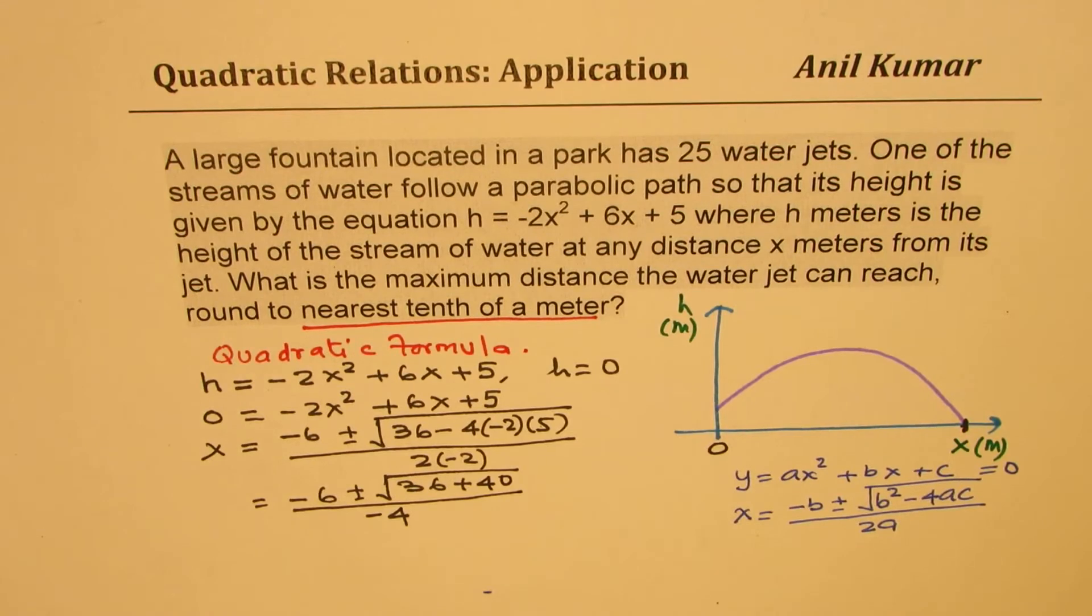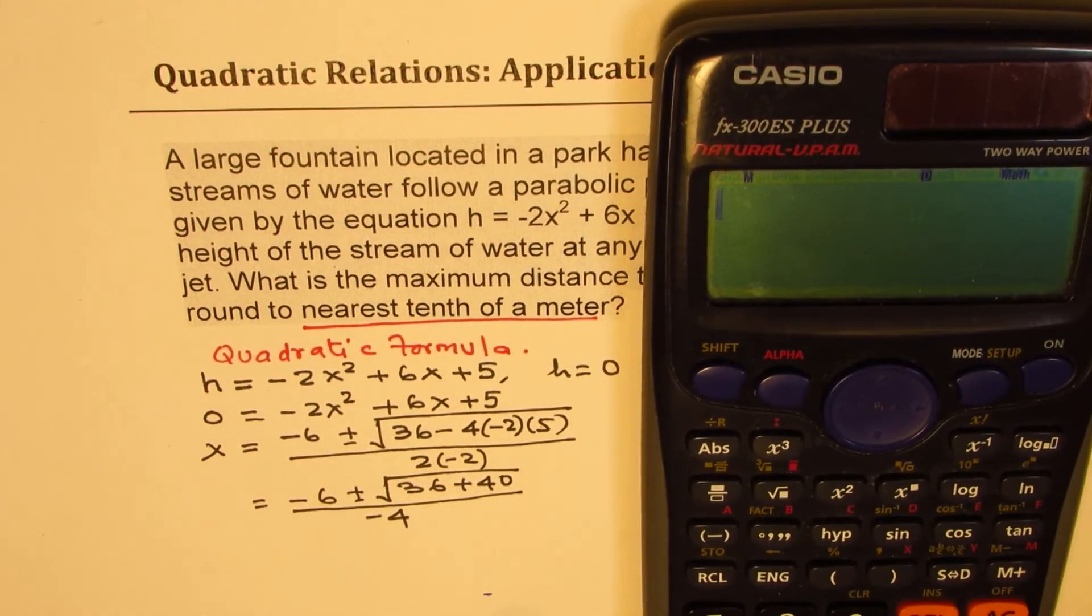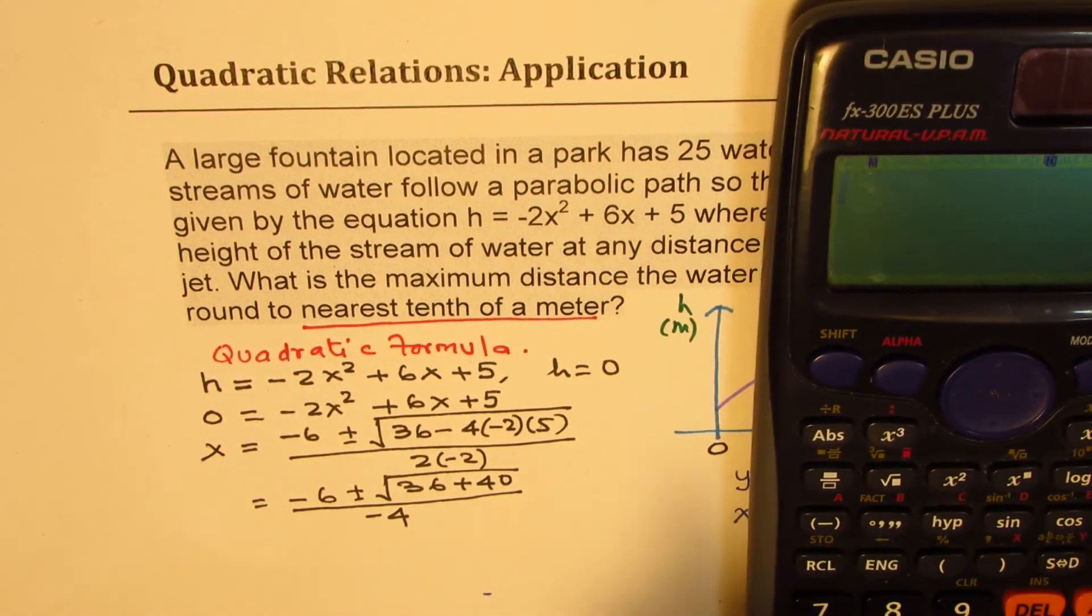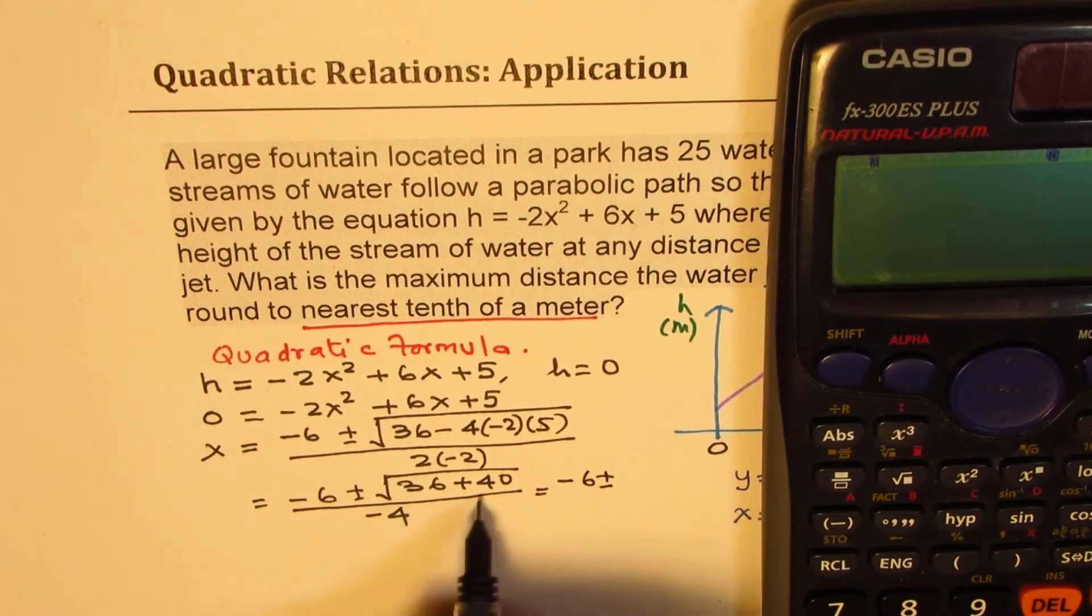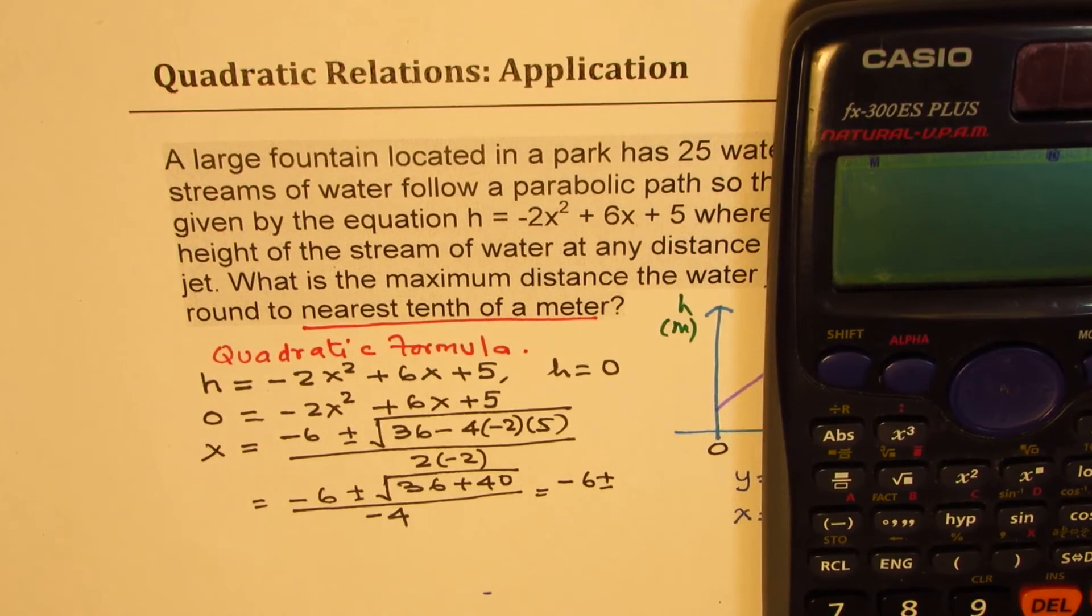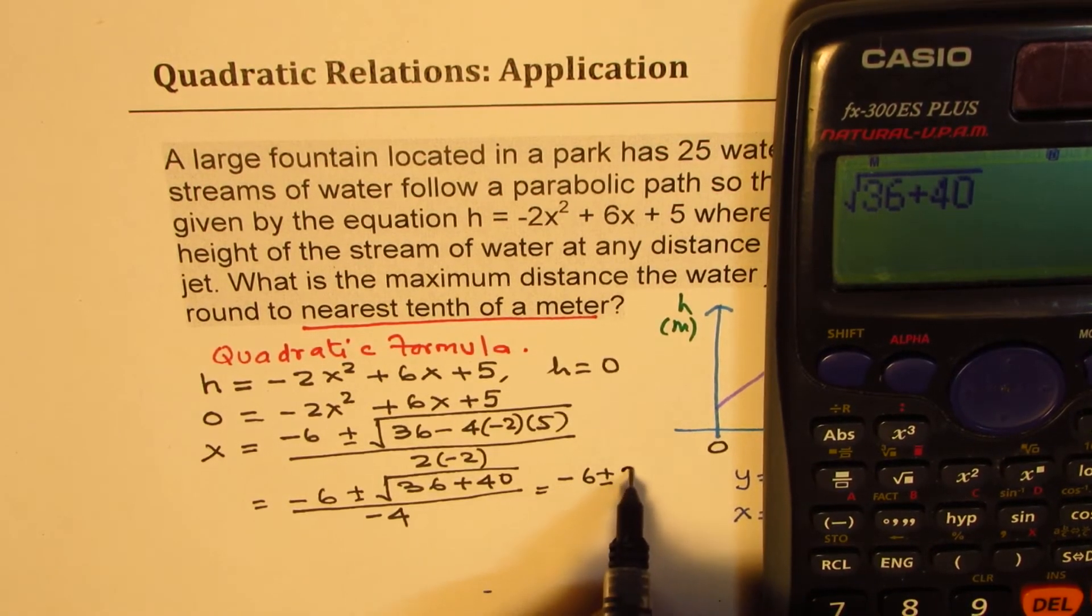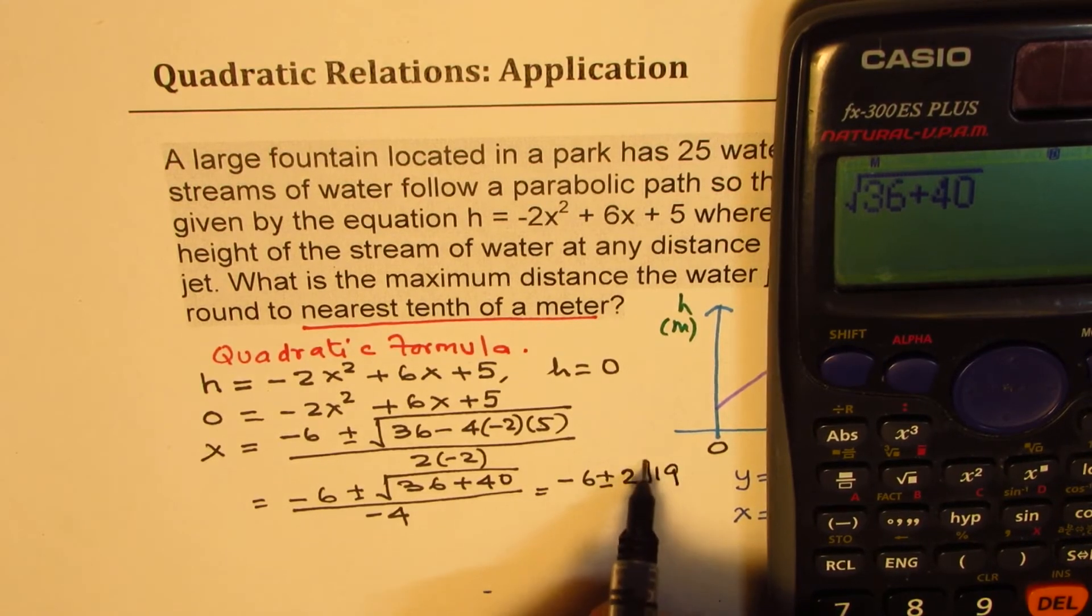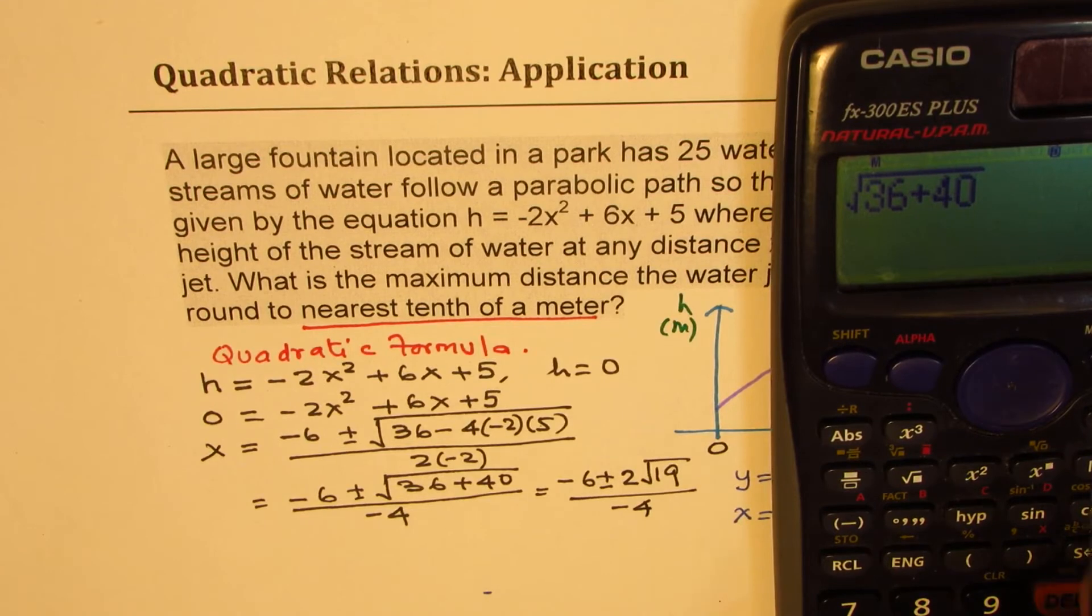So let's use calculator and find this answer. So the square root part is basically square root of 10. So you could write this as minus 6 plus minus 36 plus, so square root part is 36 plus 40, which is equal to 2 square root 19. So we'll do 2 square root of 19 over minus 4. So we have 2 square root of 19.